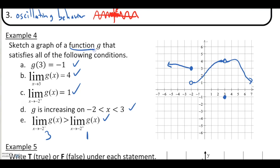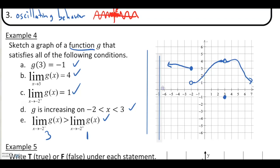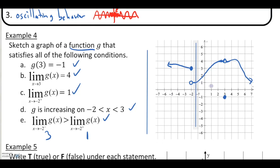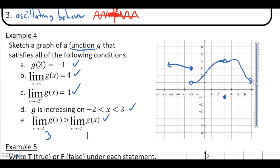Another key thing is that it was specified to be a function. So what I'm going to do is draw a nice vertical line here and move it along this graph. No matter where I place it, this graph does pass the vertical line test — so I know this is in fact a function and meets all five criteria. Good to move on.